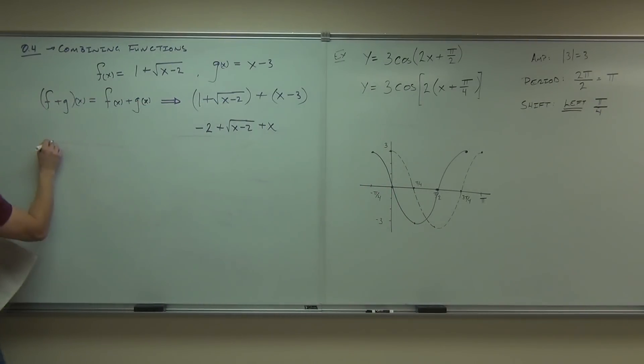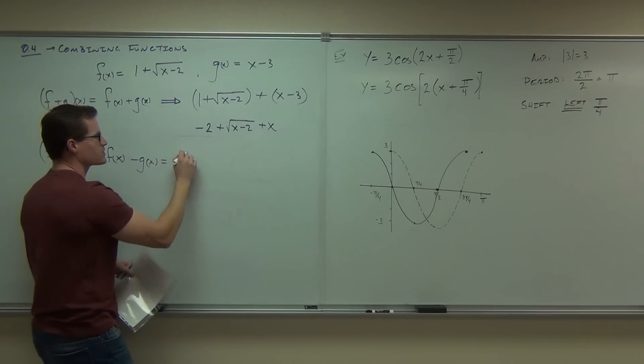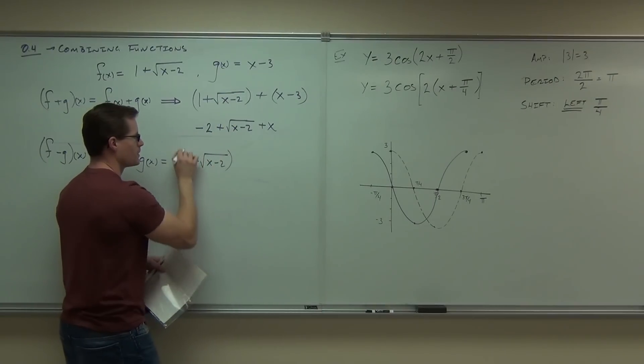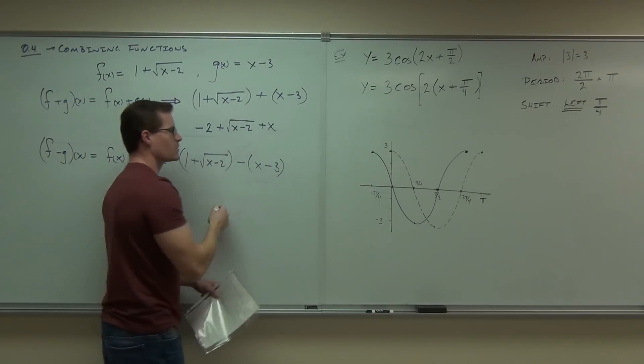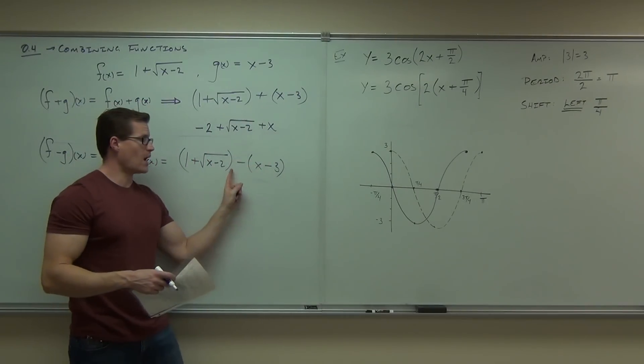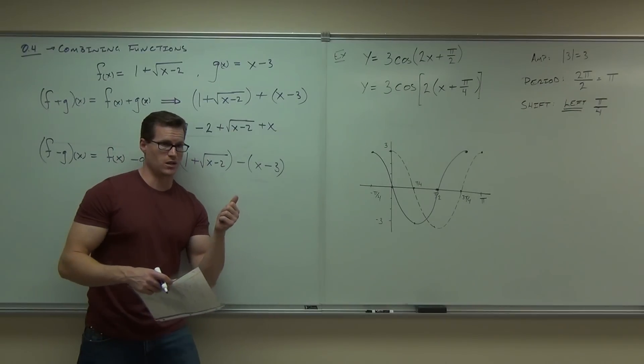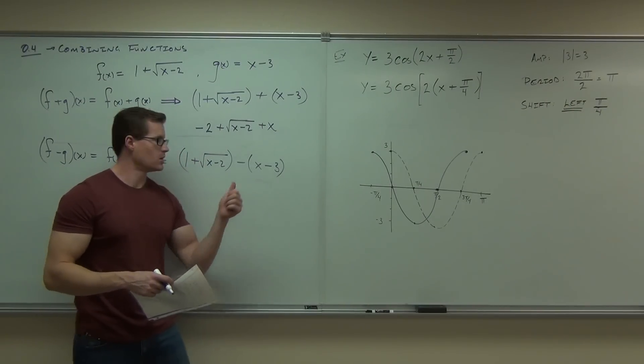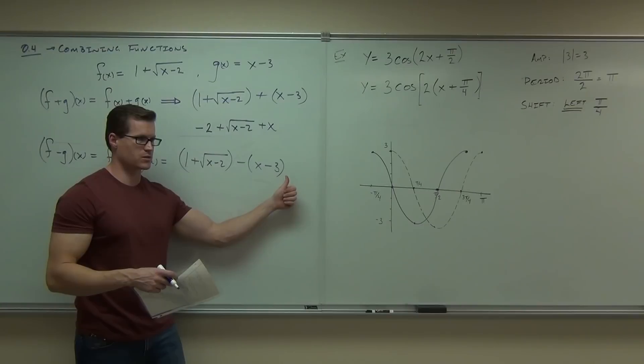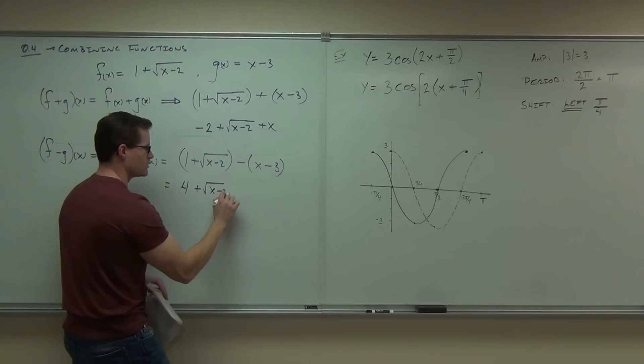You should be able to do things like f minus g of x, which is basically the same thing, except if you have a minus in the middle, you have to distribute a negative. You've been doing this stuff since basic algebra, which is why we're not going to spend a whole lot of time on it. In our case, we'd have 1 plus square root of x minus 2 minus x minus 3. Notice, though, this is just a little different than the addition. With the addition, you can just drop parentheses because there's no negative to distribute. However, what happens to these sides? Those are definitely going to change. That's going to be minus x and then the plus 3. So our answer, you can verify this later on your own, is going to be 4 plus square root of x minus 2 minus x.